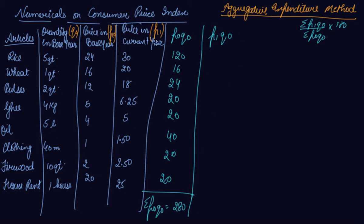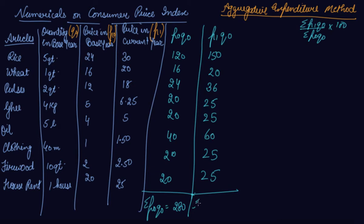Now for P1Q0: 30 into 5 is 150, then 20, 36, 25, 25, 25, and 25. So summation P1Q0 is 366.